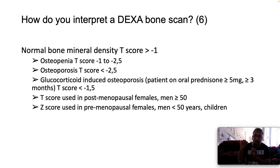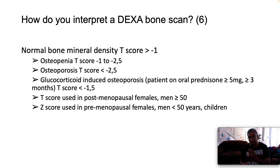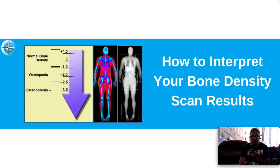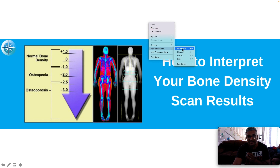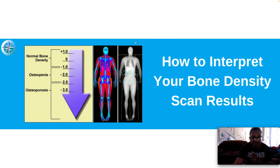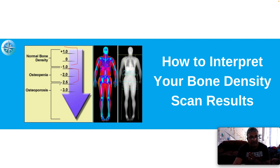The T-score is used in postmenopausal females and in men over the age of 50. The Z-score compares the patient's BMD to an age- and sex-matched control. The Z-score is used in premenopausal females, in men below the age of 50 years, and in children. Pictorially, normal bone mineral density is from minus one to plus one; osteopenia is from minus one to minus two point five; anything below that is osteoporosis.